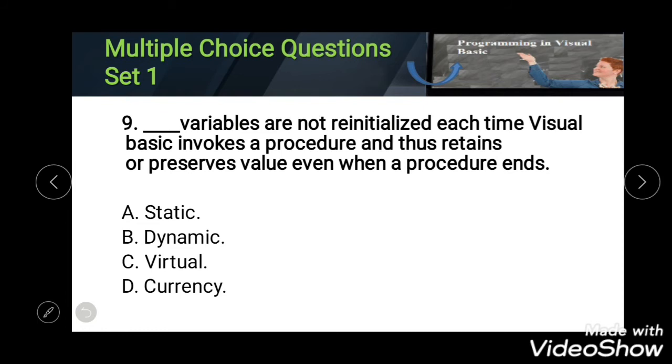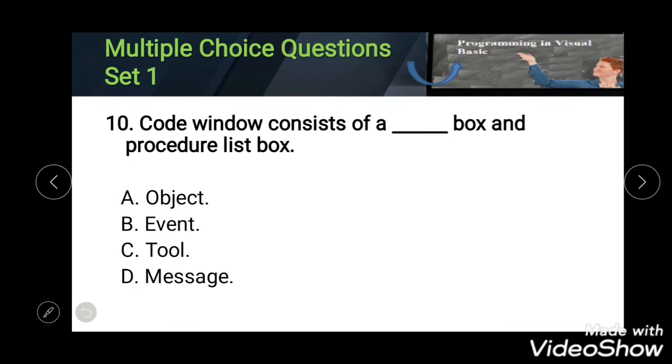Tenth: code window consists of a blank box and procedure list box. Options: Object, Event, Tool, and Message. The correct one is Object.